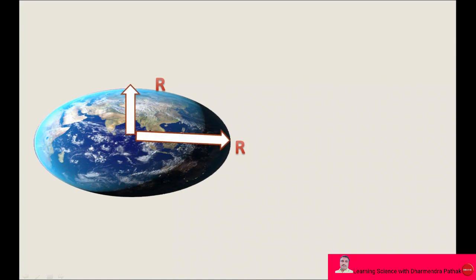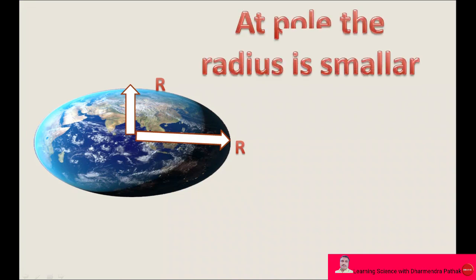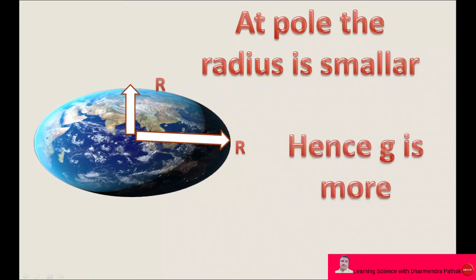Earth is not a perfect sphere. It is slightly flat at the poles. Hence, polar radius is smaller than the equatorial radius. At the pole, radius is smaller, hence acceleration due to gravity is more, because acceleration due to gravity is inversely proportional to the square of the radius.